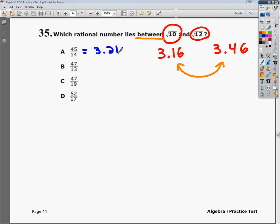Then try 47 divided by 13, you're going to get $3.62. When you plug in C, you're going to end up getting $2.47.